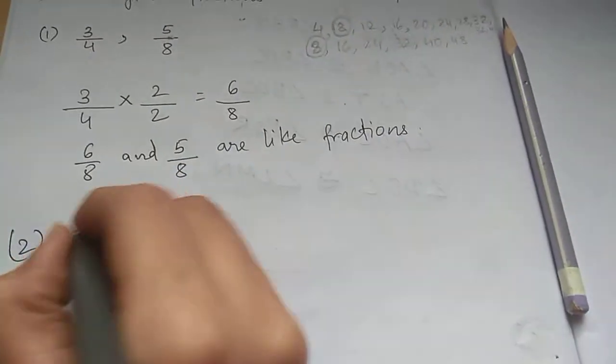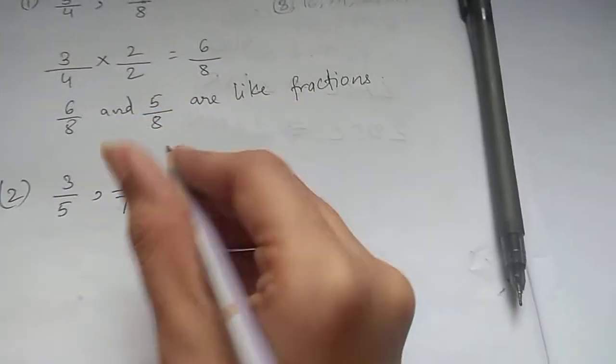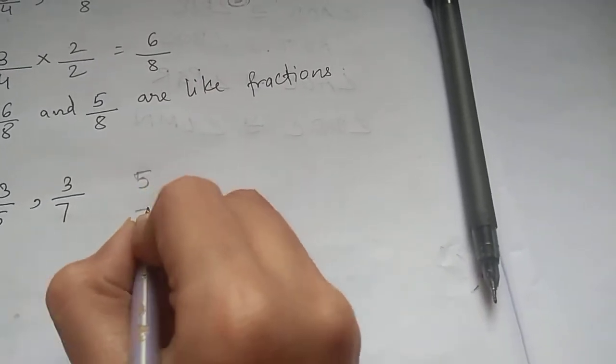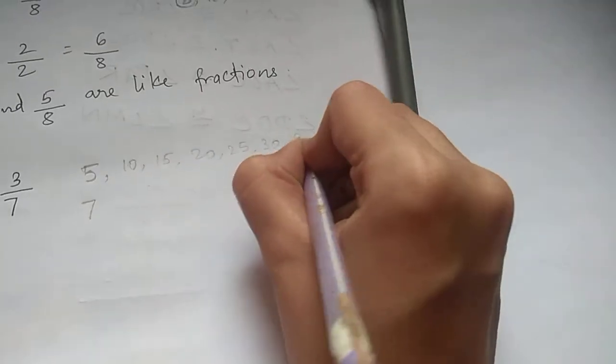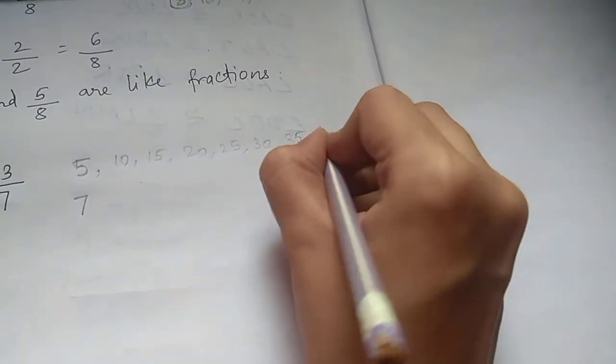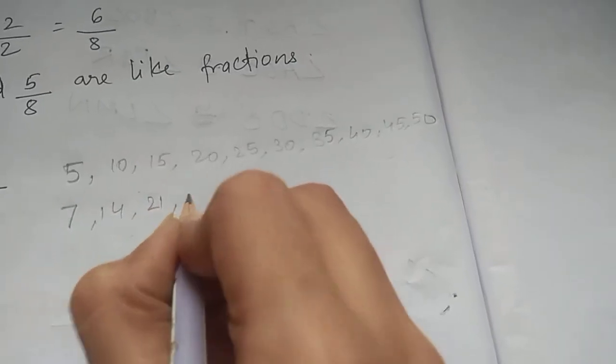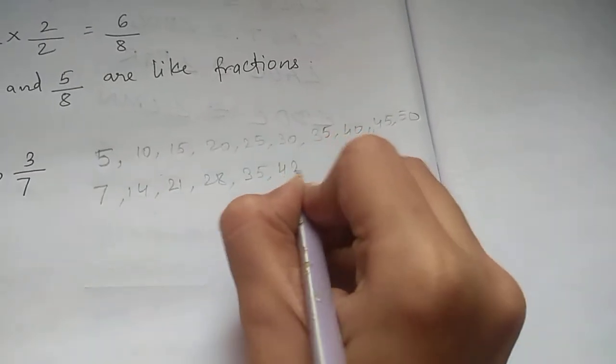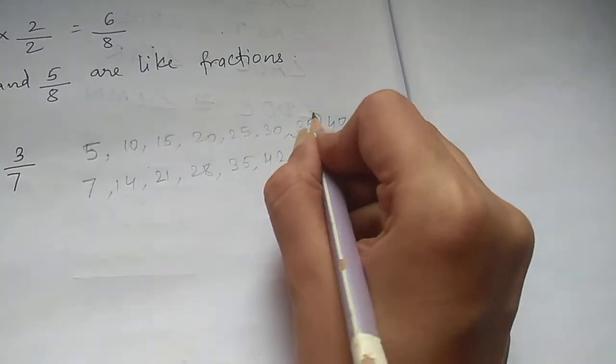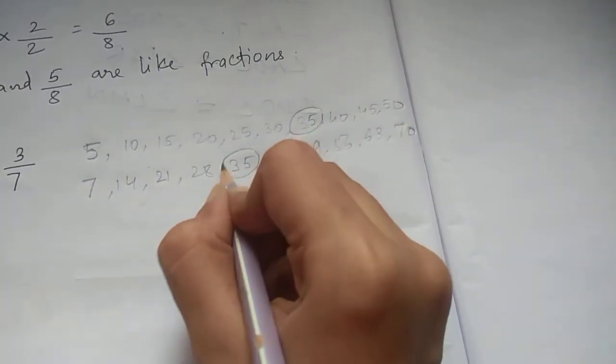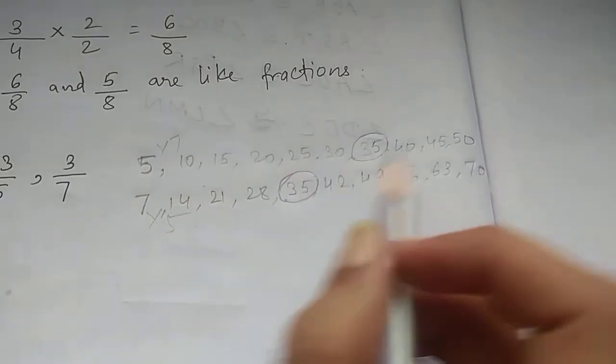Now second one is 3 by 5 and 3 by 7. Again denominators are not same, so let's see. First is 5 and 7. So 5 1s are 5, 5 2s are 10, 15, 20, 25, 30, 35, 40, 45, 50. Let's see 7: 14, 21, 28, 35... The common number here in these two tables is 35.